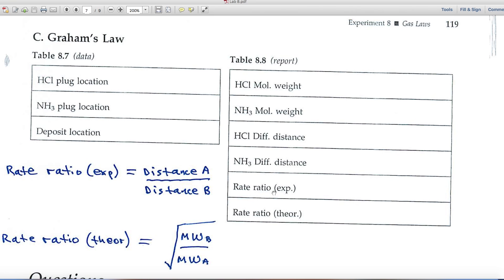And when you calculate the rate ratio, the experimental value, it'll be based upon these distances. The experimental rate ratio is equal to the distance of A over the distance of B. Or in other words, ammonia over HCl. And the theoretical is a little bit different. Here you've got to use a little bit of math because it's the square root of the molecular weight of B over the molecular weight of A.